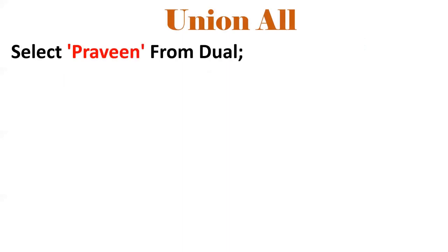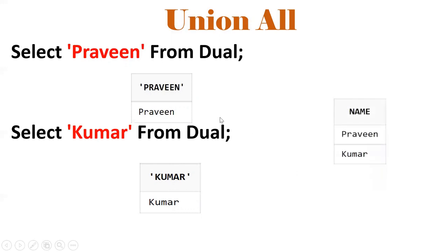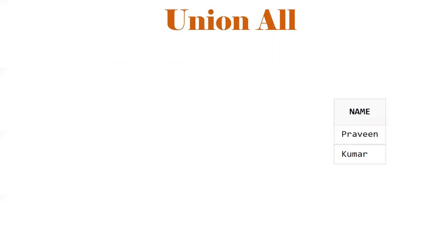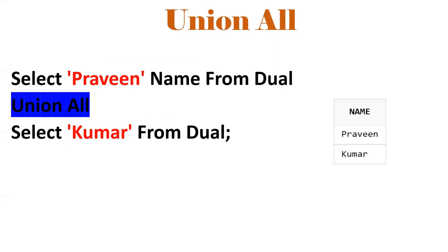Next is UNION ALL. If I query SELECT 'Praveen' FROM DUAL, the output will be column Praveen with value Praveen. Similarly, if I query SELECT 'Kumar' FROM DUAL, the output will be column Kumar with value Kumar. My requirement is to club these two result sets into a single result set. We use a set operator for that — UNION ALL. UNION ALL clubs two result sets into a single result set.